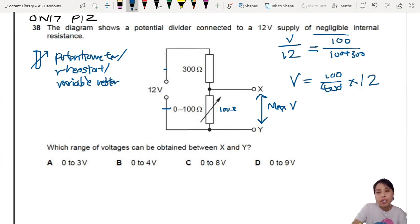It's also based on the ratio idea that we looked at earlier. So we calculate this one properly. Yeah, where's my calculator? 100 over 400 times 12. 3 volts.